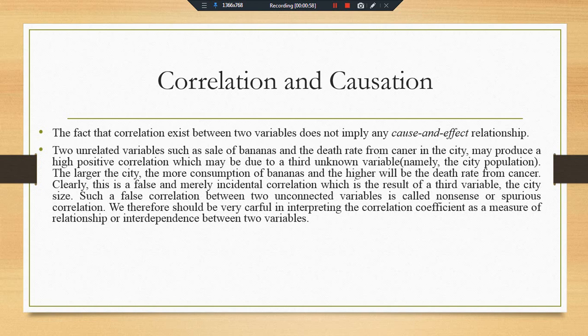We have a best example here: we found that with rising sales of banana, the death rate of a city will increase. So if we find the correlation between the sales of banana and the death rate of a big city, then this will produce a positive relationship. But this is a well-known fact that fruits increase the health status of the masses, not decrease it.